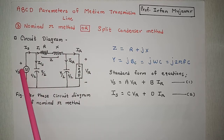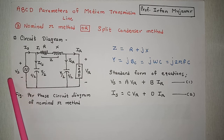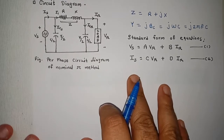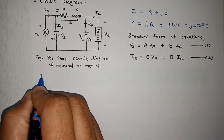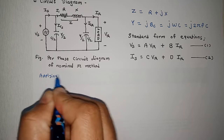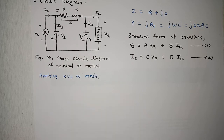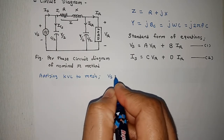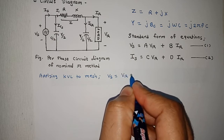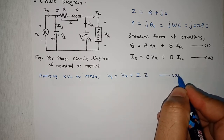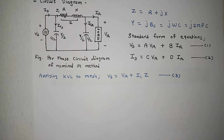First, we will represent Vs in terms of Vr and Ir. We can apply KVL — Kirchhoff's voltage law — to the mesh to obtain the equation for Vs. Applying KVL to the mesh, we get: Vs = Vr + I1·Z. Let us call this equation number 3.